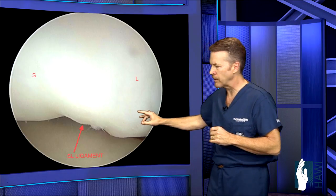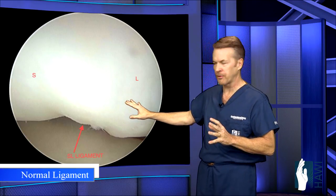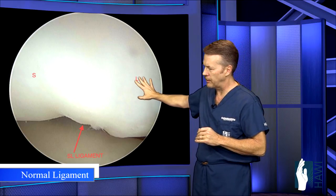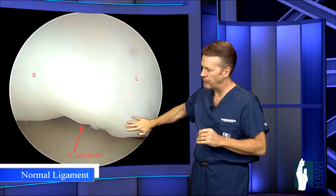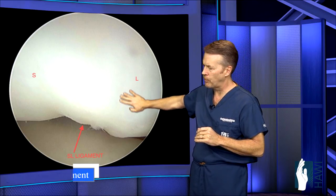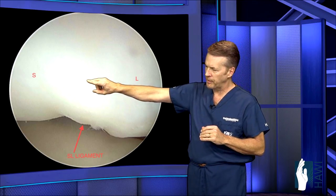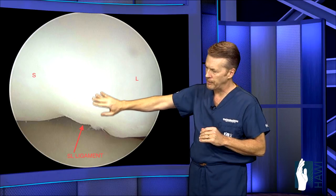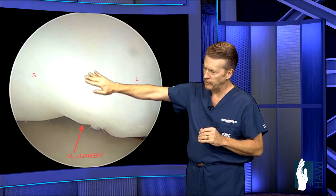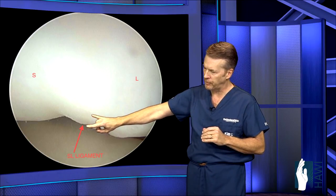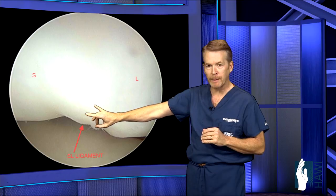Let's look at an actual normal scapholunate ligament. This is the lunate here — this bone is covered by normal cartilage, and then over on the scaphoid the same. And then there's this fluffy ligament where the arrow is pointing, called the scapholunate ligament, that can be disrupted.